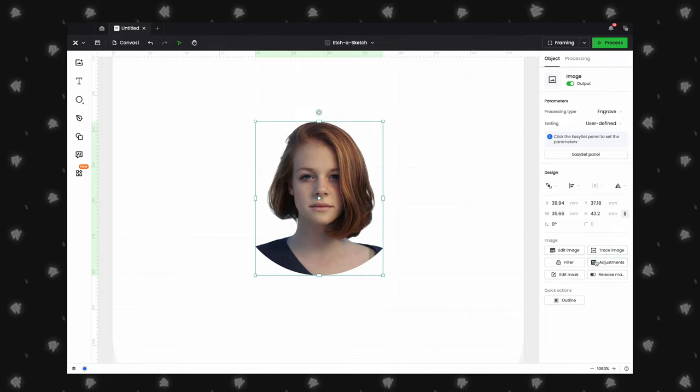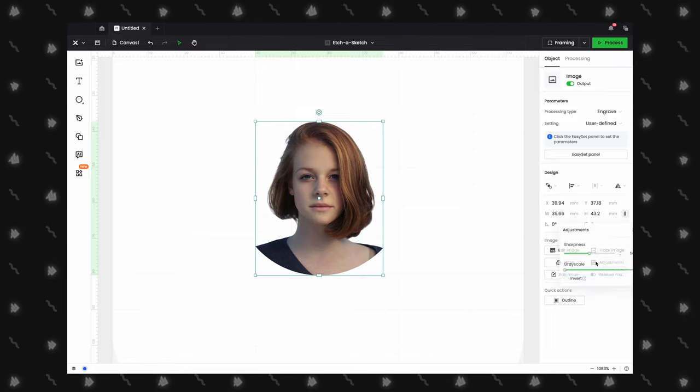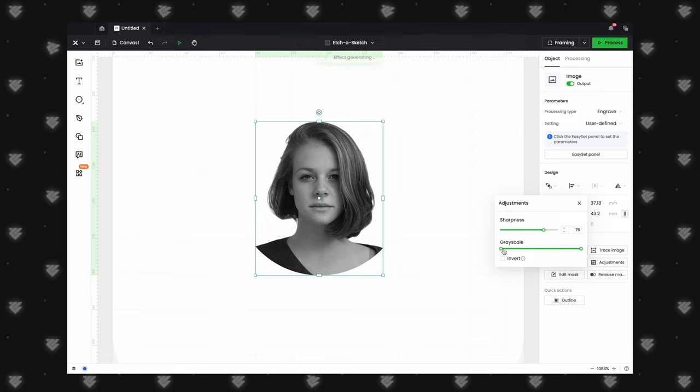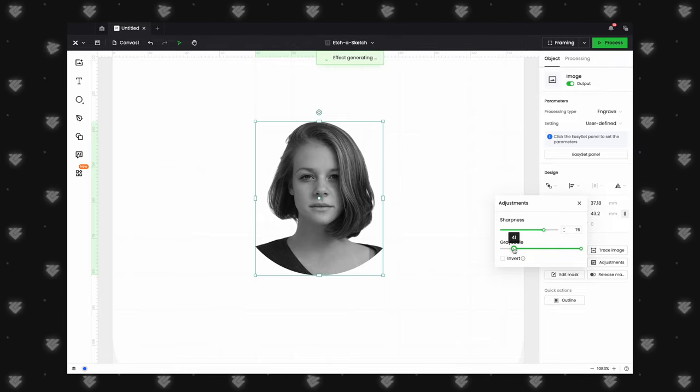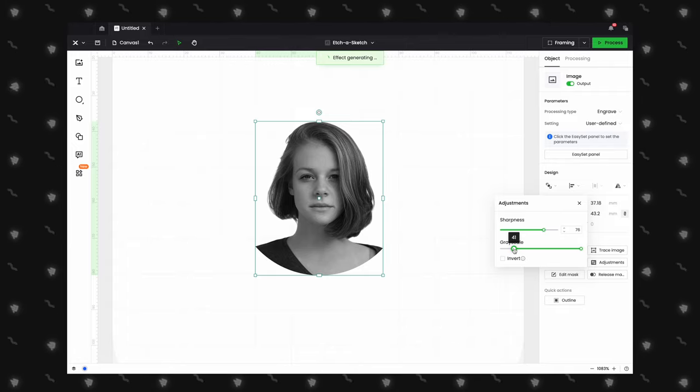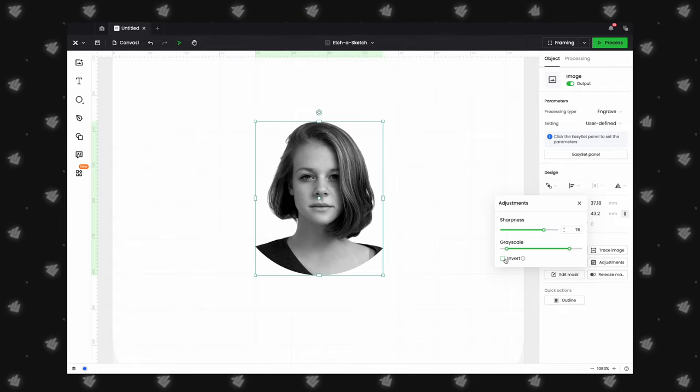Next, we will select the image, click on Adjustments, and update these settings. We typically adjust the grayscale slider to add more contrast. Once we are happy with the result, we can click on Invert Image. This is very important.